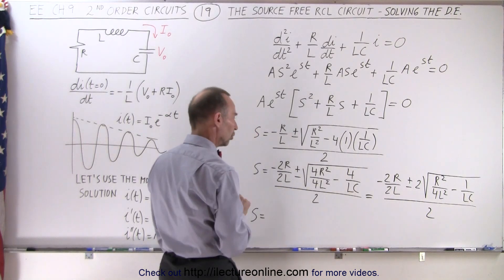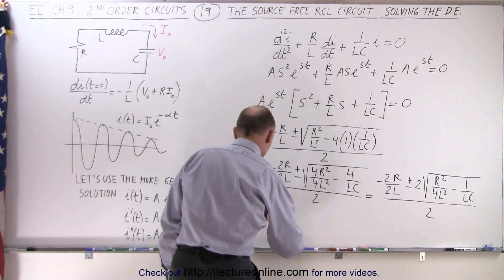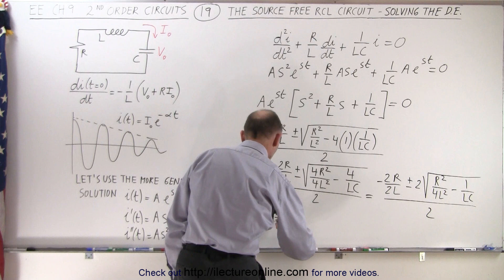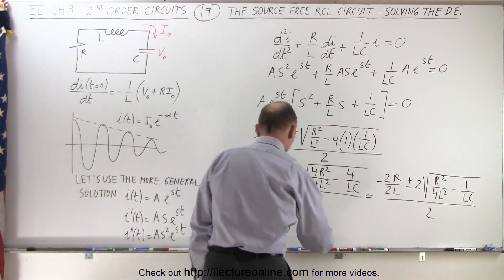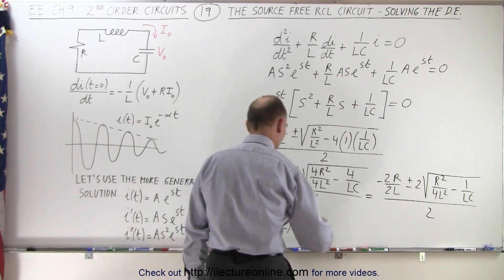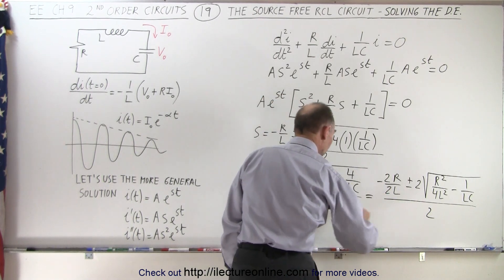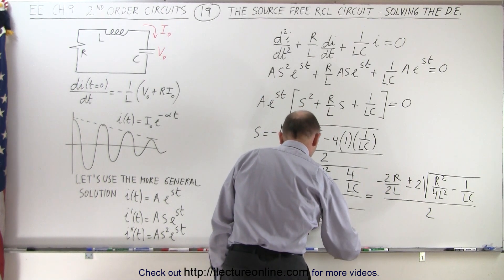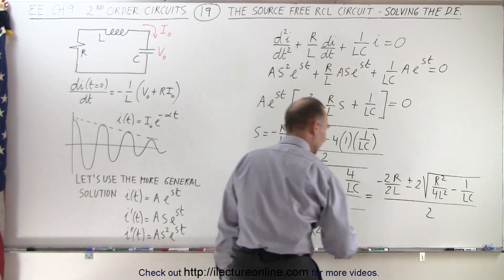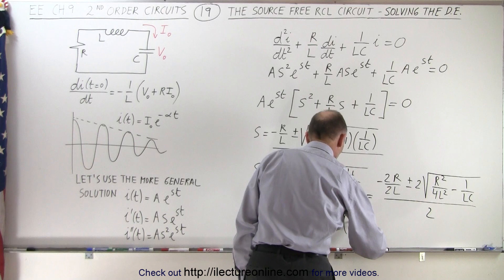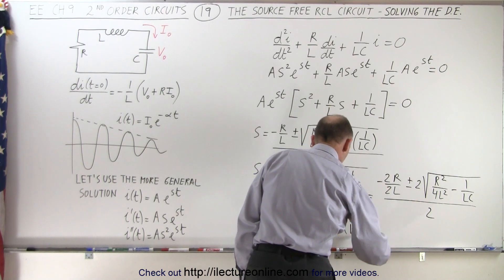And now notice I can divide the 2 into the numerator of both of the terms right here. So s will be equal to minus r over 2l, and I'm going to put that in parentheses, plus or minus, the 2 is now canceled out, times the square root of r over 2l quantity squared, and then minus 1 over lc.